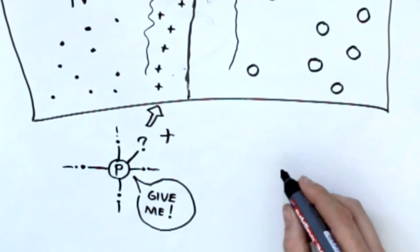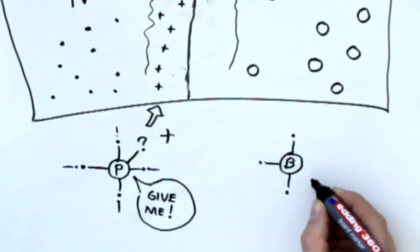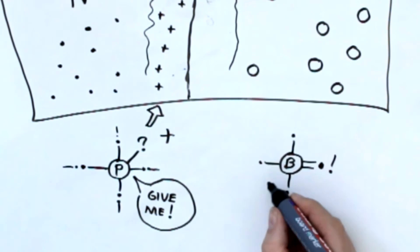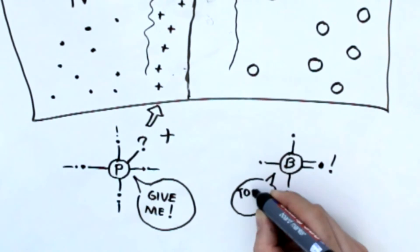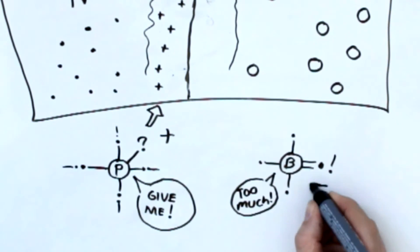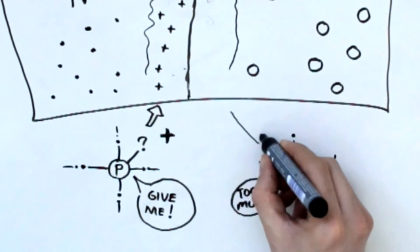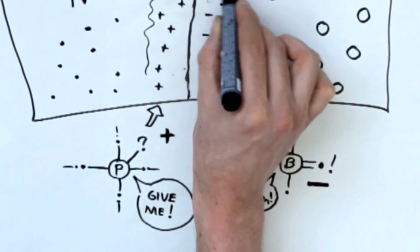On the other side of the depletion zone, the boron atoms used to have three electrons, but they now have four. This causes them to repel electrons. These negative ions have a negative charge. And believe it or not, our solar cell is now ready.